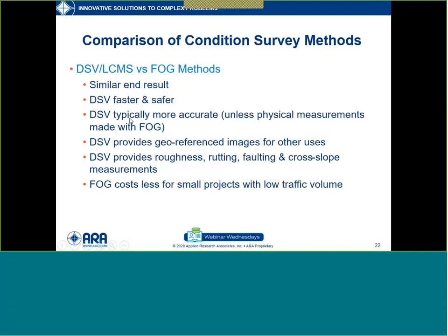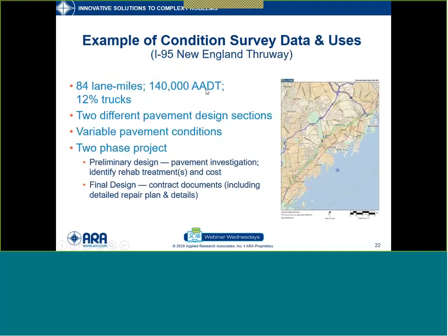I've chosen two examples to demonstrate: one very comprehensive investigation and one simpler. The comprehensive one was I-95 in the New England section of the New York Thruway, near New York City — 84 lane miles total, enormous traffic volume of 140,000 AADT. There were two different pavement sections: one with 40-foot joint spacings and 10 inches thick, and a slightly later vintage at 12 inches thick with 18-foot joint spacing. We did this investigation in two phases — preliminary design to identify the most cost-effective rehab treatment, and final design where contract documents detailed repair locations.